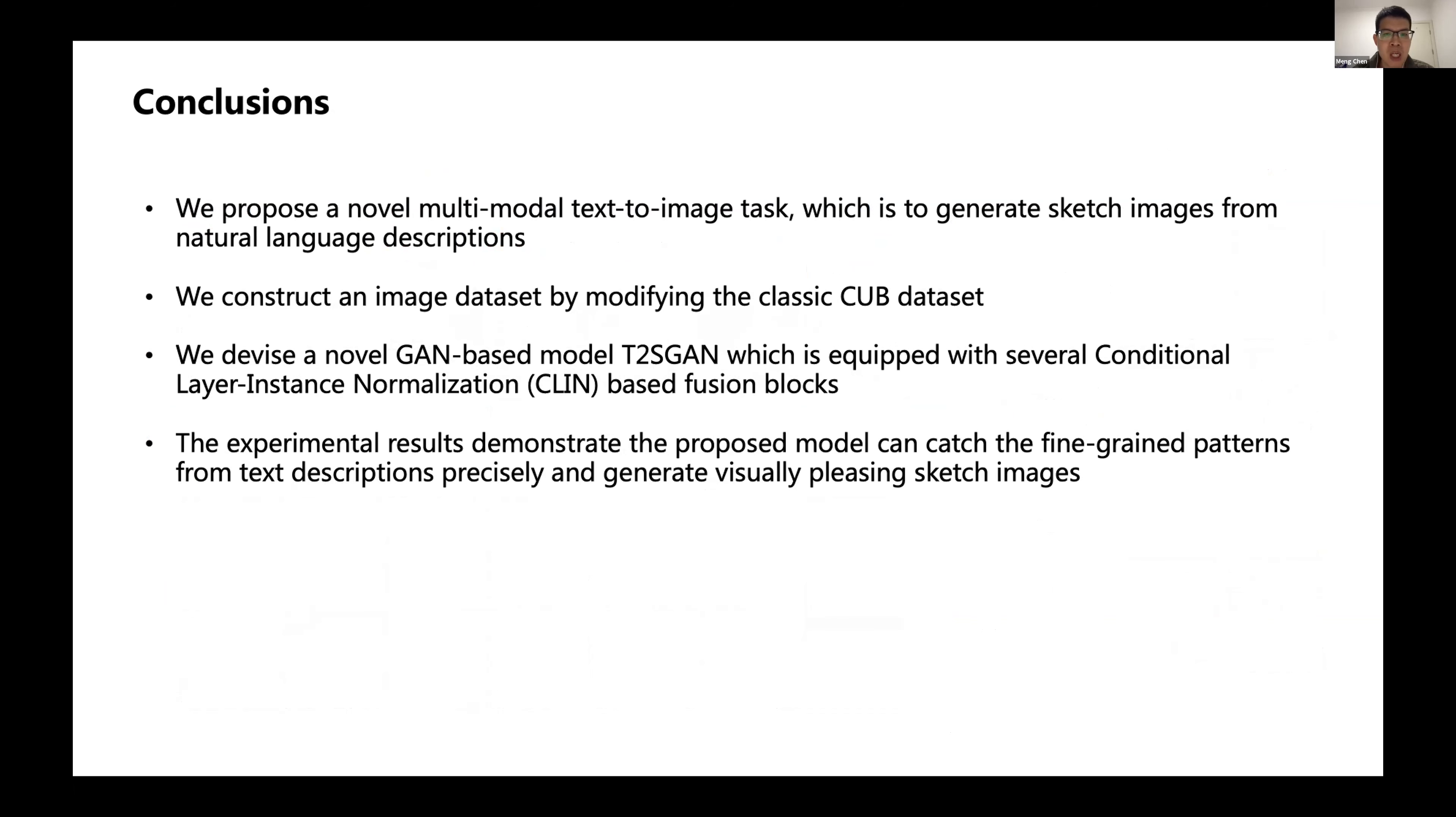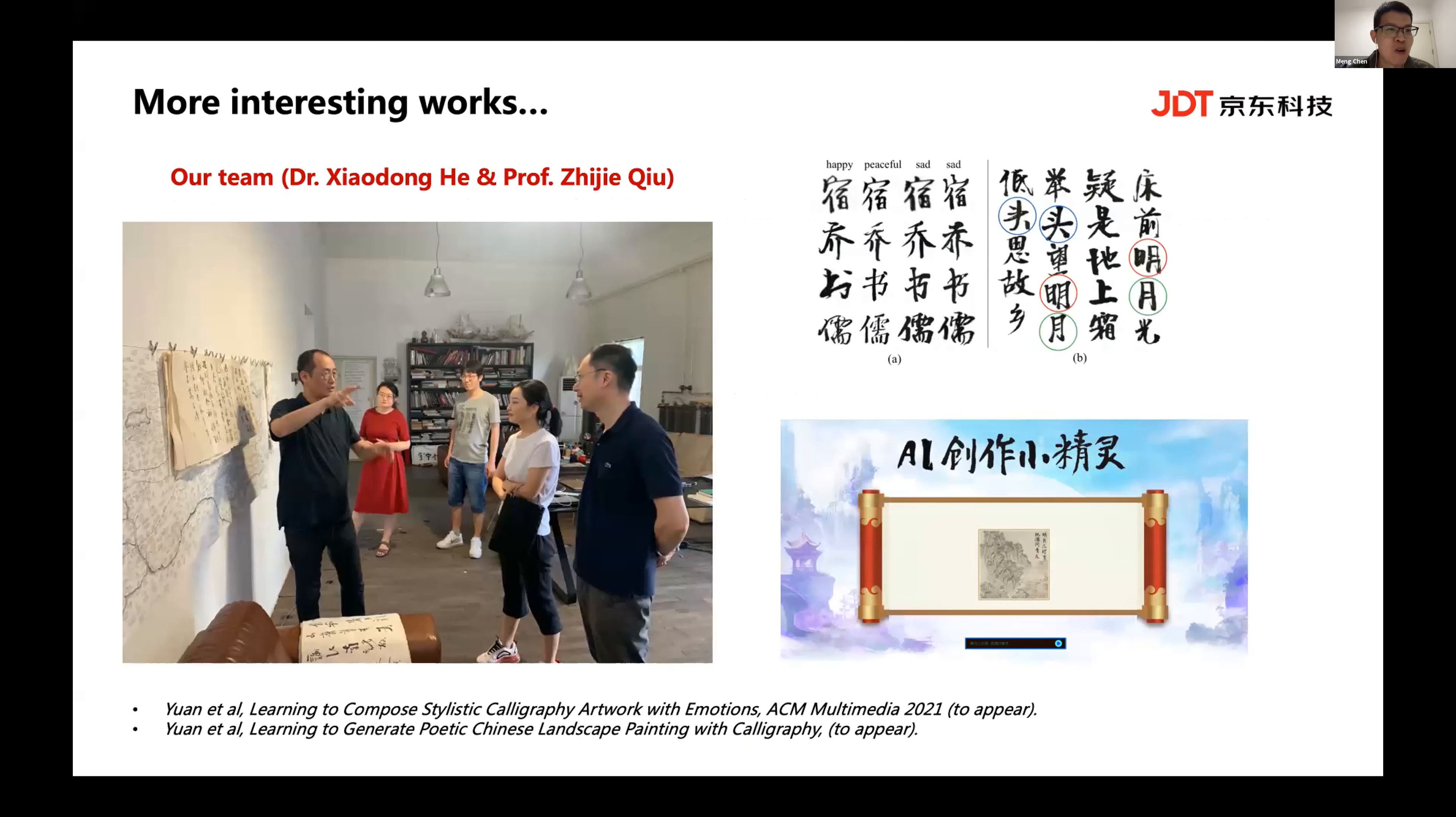Finally, we can summarize the following conclusions. First, we propose a novel multi-modal text-to-image task, which is to generate sketch images from natural language descriptions. Second, we construct an image dataset by modifying the classic CUB dataset. Then we devise a novel GAN-based model equipped with several conditional layer instance normalization-based fusion blocks. Finally, the experimental results demonstrate the proposed model can catch fine-grained patterns from descriptions precisely and generate visually pleasing sketch images. This is the last slide. Because you mentioned I did some work related to art, I will introduce some of our recent interesting work.